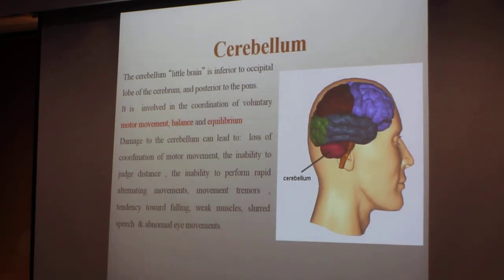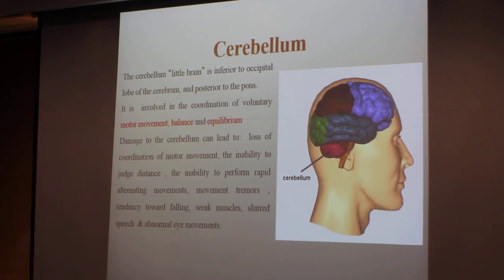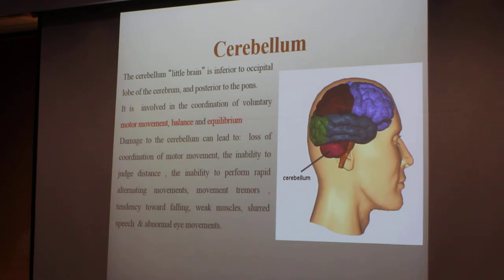Cerebellum — the little brain — is posterior to the occipital lobe of the cerebrum and anterior to the pons. It is involved in coordination of voluntary movement, balance, and equilibrium. Damage to the cerebellum can lead to loss of coordination of motor movement, inability to judge distance, inability to perform rapid alternating movements, tendency toward falling, slurred speech, and abnormal eye movement — all related to muscle movement control.